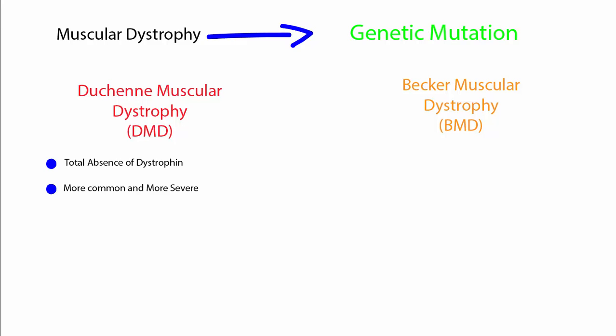DMD is the total absence of dystrophin from a mutation of the dystrophin gene. This disease is more common in males than in females and becomes evident around the ages of 2 to 3 years old. This type of muscular dystrophy is the most common and most severe of the muscular dystrophies.